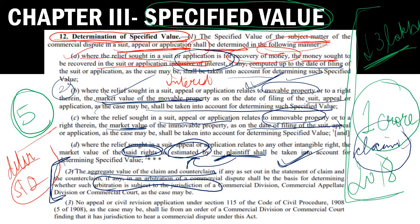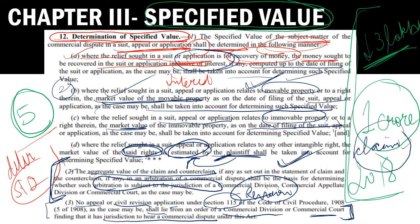An important point: no appeal or civil revision application under Section 115 of the CPC can be filed. Section 115 CPC deals with revision. So no appeal or civil revision application under Section 115 shall lie from any order determining jurisdiction under this Act — meaning you cannot take recourse to the CPC for this purpose.